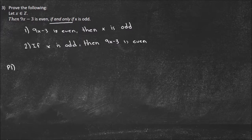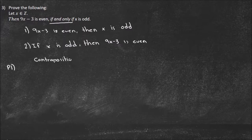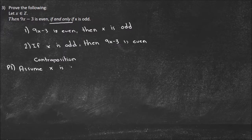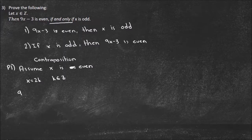So I'm going to do this one by contraposition. That's the most important part — being able to choose what type of proof to use in each situation. I'm going to assume X is even, because I want to assume not Q. So assume X is even, meaning X equals 2K, where K is an element of Z. And now I'm just going to plug that in: 9 times 2K minus 3 equals 18K minus 3.